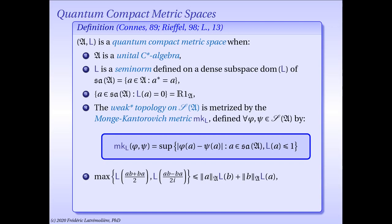Specifically, the Monge-Kantorovich metric between states phi and psi is the supremum of the absolute value of phi minus psi over the unit ball for the semi-norm L. We also connect the multiplicative structure of our C-star algebra with our semi-norm L by requiring that L satisfies a form of the Leibniz inequality. If A and B are in the domain of L, then L of the real part of the product AB and L of the imaginary part of the product AB are both bounded above by an expression depending only on the norm and L-seminorm of A and B — the standard expression being the norm of A times L(B) plus the norm of B times L(A), which is the usual Leibniz rule.